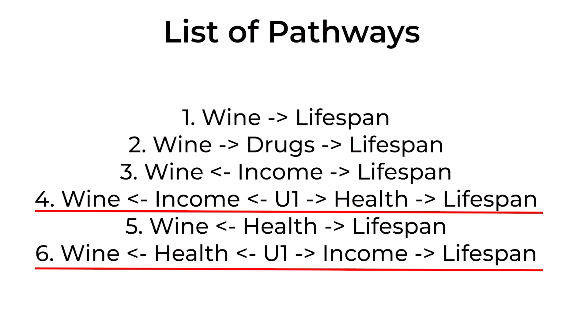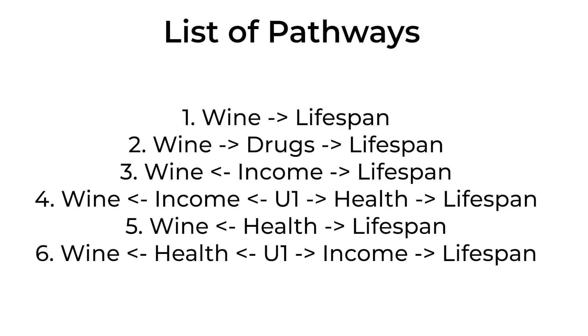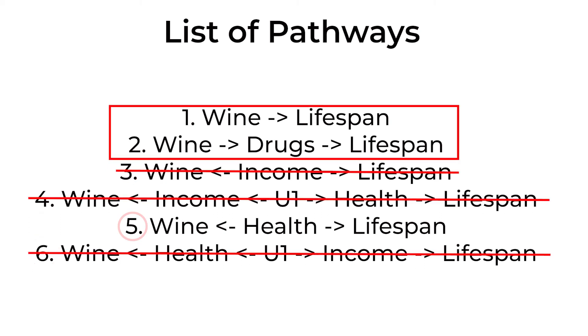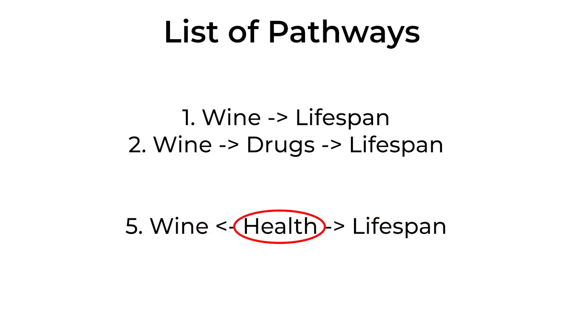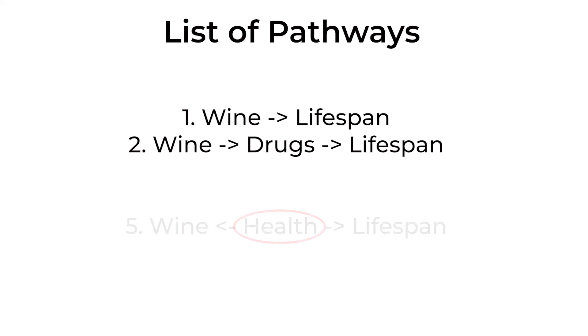Wine and lifespan could be related because income affects both of them — that's the third pathway. They could be related because health affects both — that's the fifth pathway. They could also be related because income and health affect those two things and are related to each other — that's the fourth and sixth pathways. If I control for income, I close down pathways three, four, and six. After adjusting for income, we're left with the front door paths and the fifth path. To fully identify the effect of interest, we also need to control for health.